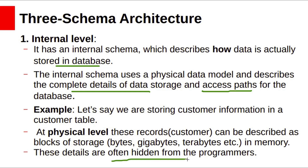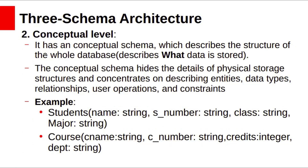The details of physical storage are often hidden from programmers. The conceptual level has a conceptual schema which describes the structure of the whole database. Conceptual schema hides the details of physical storage and concentrates on describing entities, data types, relationships, and constraints using simple structures. For example, in the university database, student and courses are entities, and the student entity contains attributes: name, student number, and class major, all of type string.